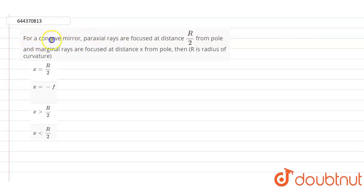Okay, so here in this question, it is given that for a concave mirror, paraxial rays are focused at a distance of r divided by 2 from the pole and marginal rays are focused at a distance of x from the pole. Here r is the radius of curvature.